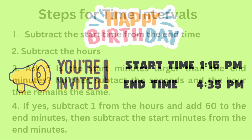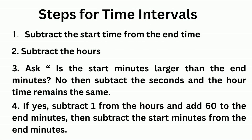First, let's go over the steps for calculating time intervals. Step one: you're always going to subtract the start time from the end time. Next, you're going to subtract the hours. Then you will ask yourself: is the start minutes larger than the end minutes? If no, then you subtract the minutes and the hour time remains the same. If yes, you subtract one from the hours, then add 60 minutes to the end minutes, and then subtract the start minutes from the end minutes.